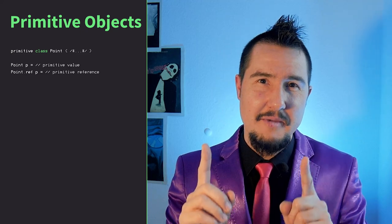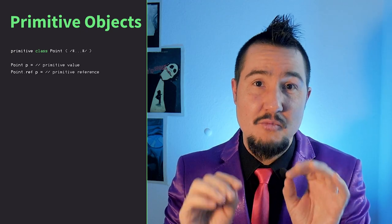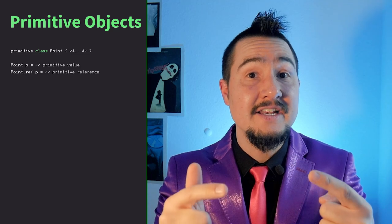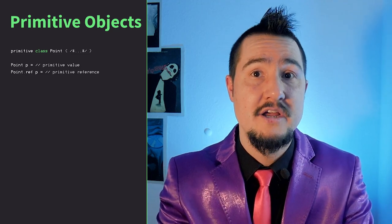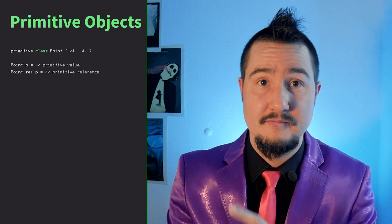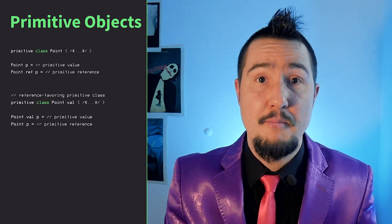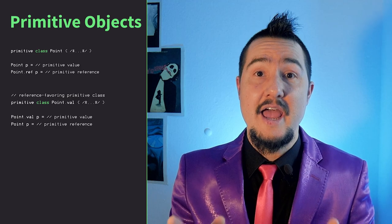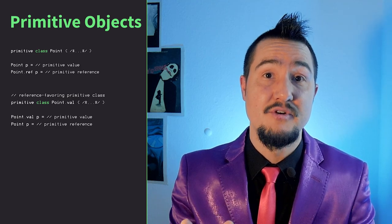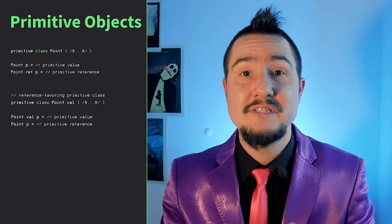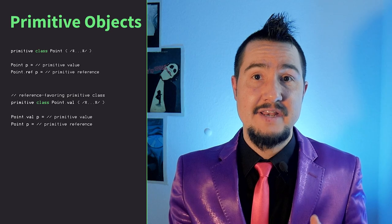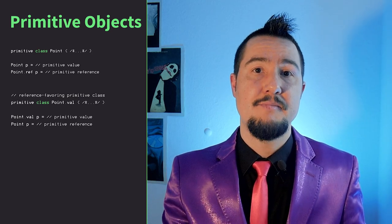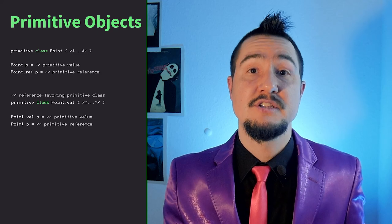To make matters a bit more complicated — but also more compatible — the JEP proposes another kind of primitive class called reference-favoring. Then 'Point p' is a primitive reference and 'Point.val p' is a primitive value. We will see that come into play in the next draft JEP, and presumably even more so in the remaining JEP about generic specialization.